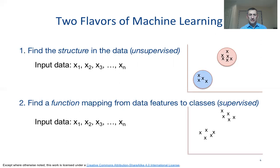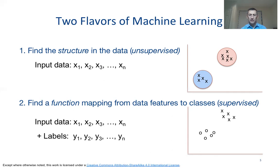In the second flavor, called supervised machine learning, we are not only looking at data points and how they differ in their feature values, but also at how the labels of those data points are different. In the bottom right corner, we see two groups — one labeled as x and another labeled with dots. In a supervised problem, we would like to define a function that maps our feature values to different output classes.